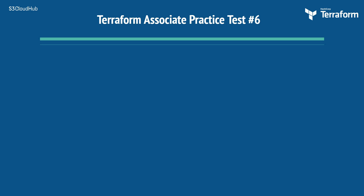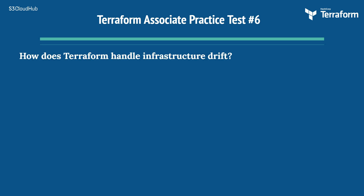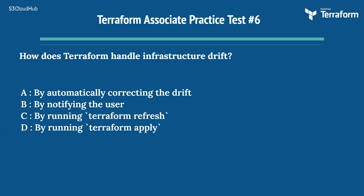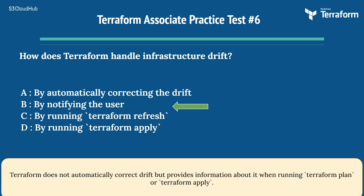Question 6: How does Terraform handle infrastructure drift? Options: A) By automatically correcting the drift, B) By notifying the user, C) By running terraform refresh, D) By running terraform apply. The right answer is B) By notifying the user. Terraform does not automatically correct drift, but provides information about it when running terraform plan or terraform apply.